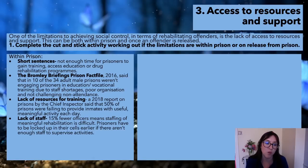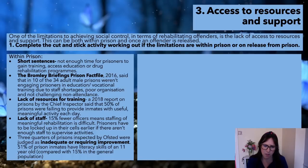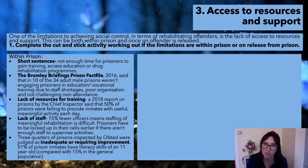15% fewer officers means staffing of meaningful rehabilitation is difficult. Prisoners have been locked in their cells earlier because there aren't enough staff to supervise activities. Three quarters of prisons inspected by Ofsted were judged inadequate or requiring improvement. 51% of prison inmates had literacy skills of an 11-year-old compared with 15% of the general population. It's a vicious cycle: people who are unemployed or lack qualifications go to prison but aren't helped there because there aren't the facilities, so they go back out still lacking skills and commit crimes again.